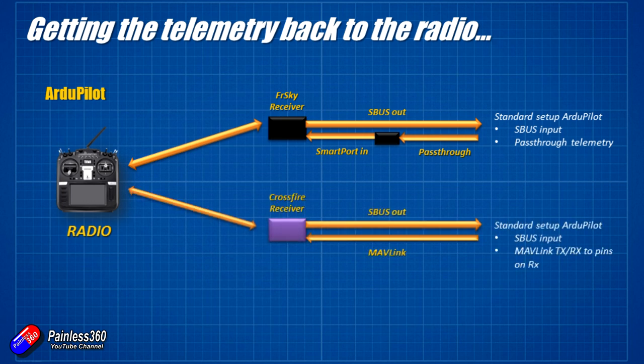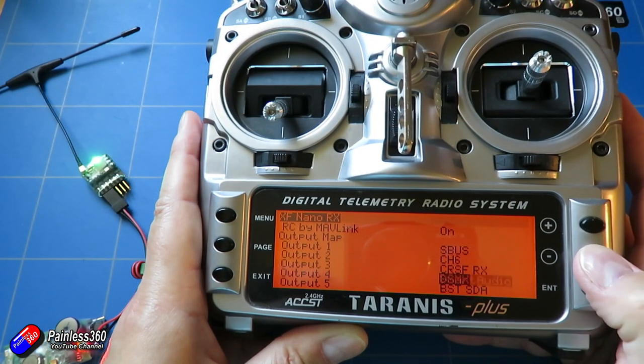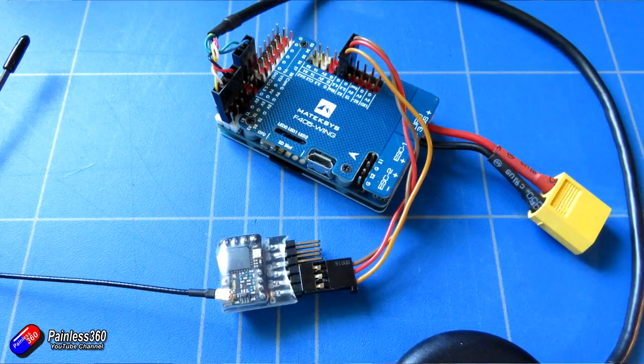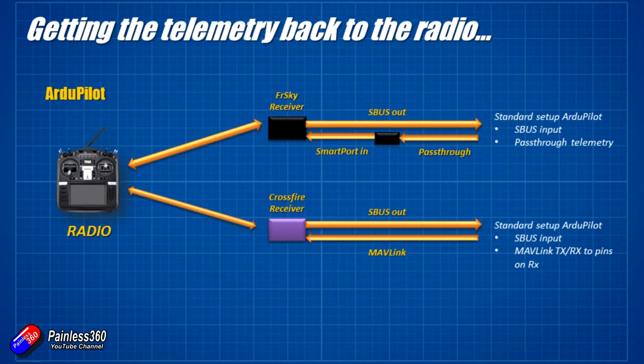The other way to do it is with Crossfire. Crossfire has Mavlink support natively, straight out of the box. If you configure two of the pins for Mavlink Transmit and Mavlink Receive, you can connect those to any spare serial port and it will natively send the Mavlink telemetry back down to the radio — meaning the Yappu scripts can read and see everything. This is one of the reasons why Crossfire is so useful; it does support things like Mavlink out of the box.